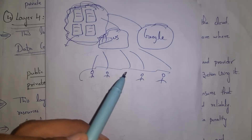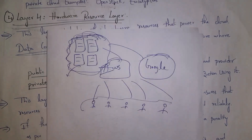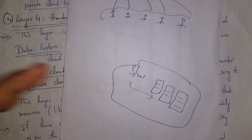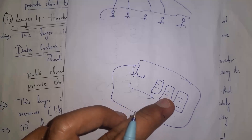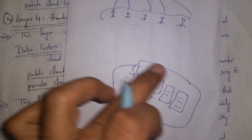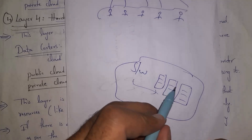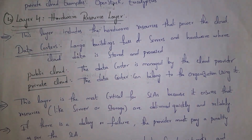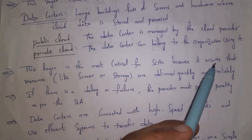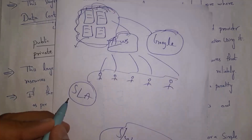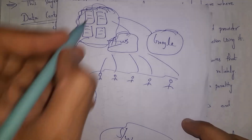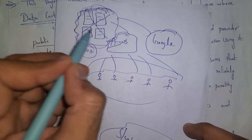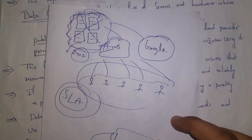AWS and Google are public clouds — anyone can use them via the internet, and their data centers are managed by the cloud providers. Some software companies create their own servers accessible only by their employees — this is private cloud, where data centers are managed by the company itself. The hardware resource layer is critical for service level agreements because it ensures resources are delivered quickly and reliably, and data centers must work 24/7 without any problem.